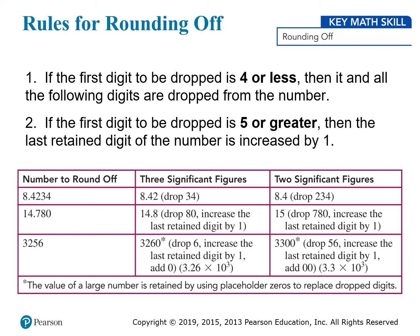To round a number, you first count the number of digits you want to keep starting from the left. Then you look at the next digit after the last one you're keeping. If that digit is less than 5, you just drop all the digits you don't need — that's called rounding down. If that digit is 5 or greater, you increase the last digit you're keeping by 1 and then drop the rest. This is called rounding up.